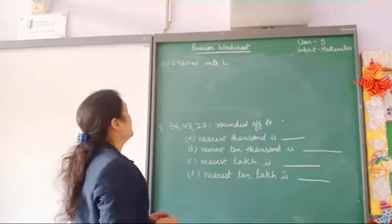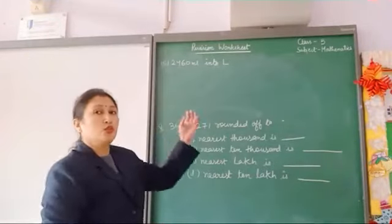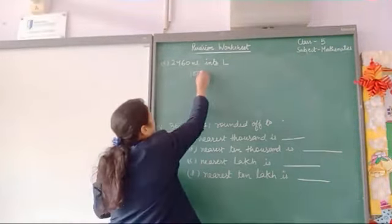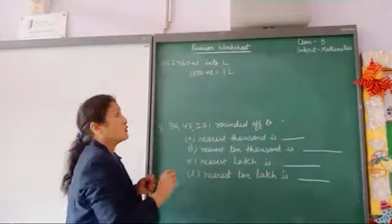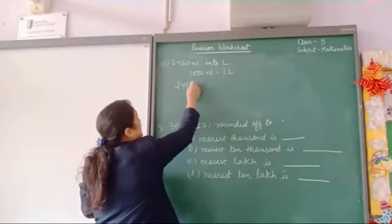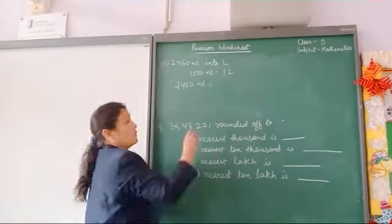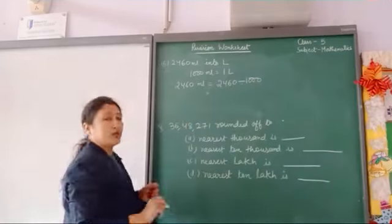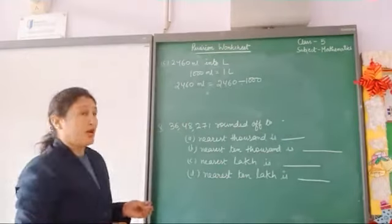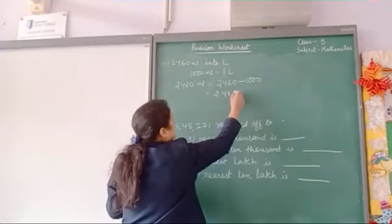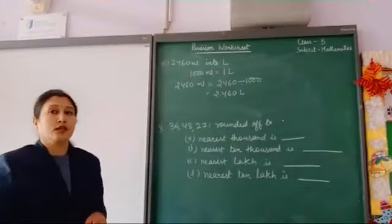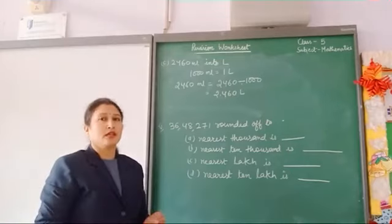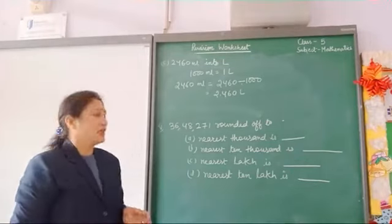Question number 4 part C: we have to convert 2460 millimeters into meters. As we know, 1000 millimeters equals 1 meter. So we divide 2460 by 1000. After dividing we get 2.460 meters, or we can say 2 meters 460 millimeters. This completes part C of question number 4.